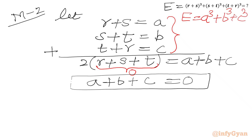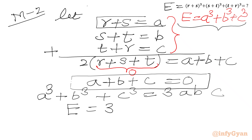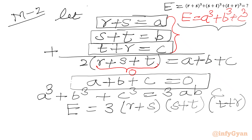Since a + b + c = 0, we apply the algebraic identity: a³ + b³ + c³ = 3abc. So e = 3abc = 3(r+s)(s+t)(t+r). Using equation 1 again: r + s = −t, s + t = −r, and t + r = −s.